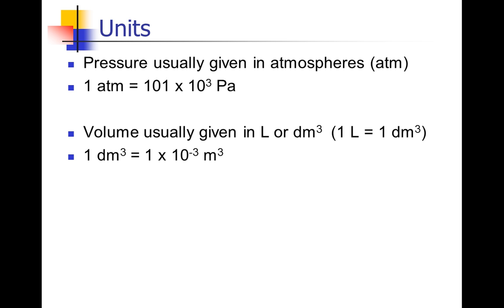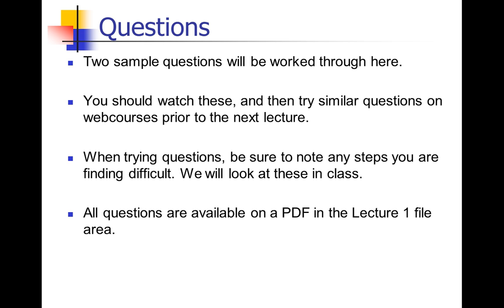A few quick notes on units. Pressure is normally given in atmospheres, and 1 atmosphere equals 101 × 10³ pascals. Volume is normally given in litres or decimeters cubed, and 1 dm³ equals 1 × 10⁻³ m³, or equivalently there are 1,000 dm³ in 1 m³. You'll need to remember those conversions for the questions.